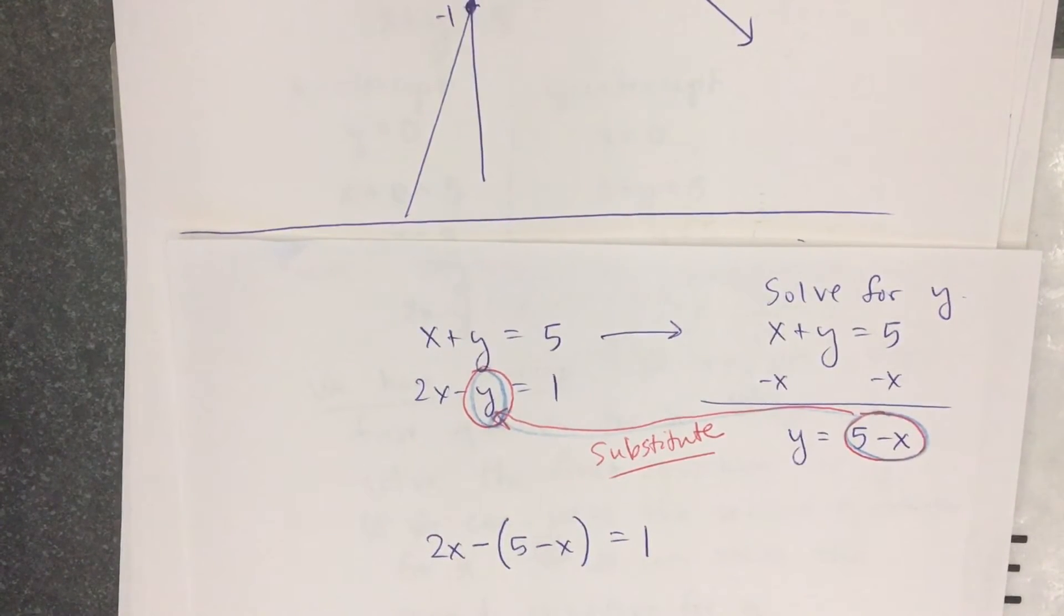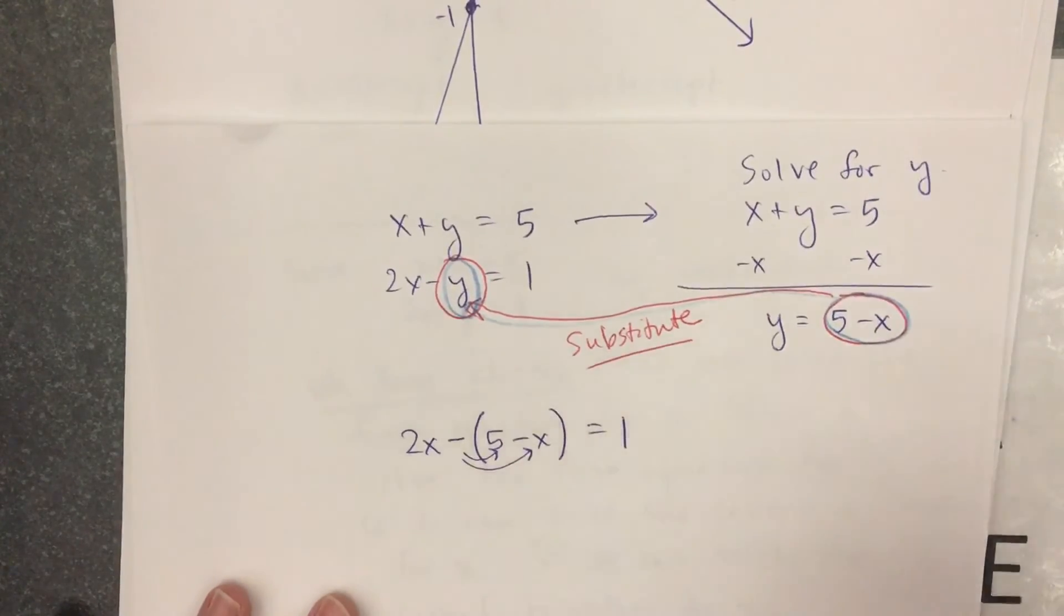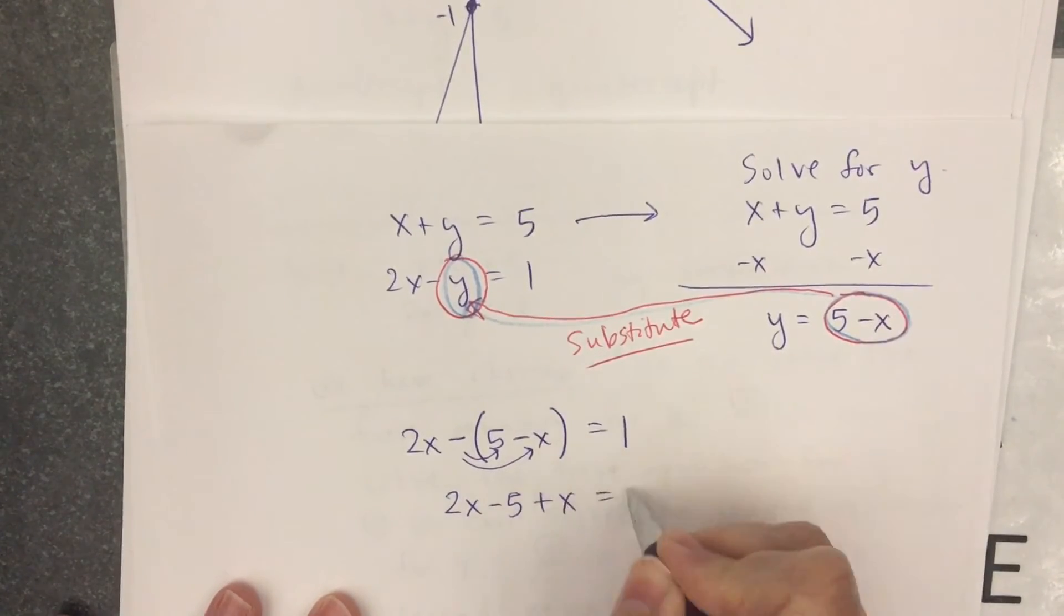This is probably trickier than any of them you're going to see in 7.5. What about this minus sign? That distributes. That changes the sign of the items in parentheses. 2x minus 5 plus x equals 1.